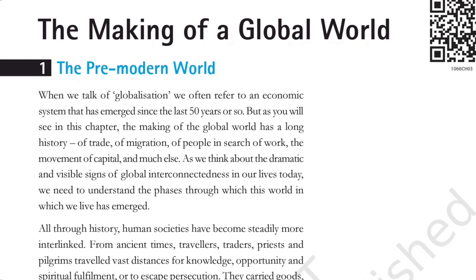So, the making of a global world — what is the global world? The global world is a world where every country is connected to one another. It is connected through the economy. We have read the last year in the Nazism chapter that when the Great Depression came to America, Germany was also affected.